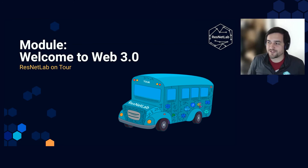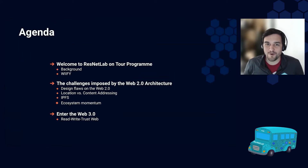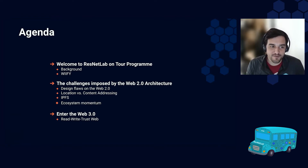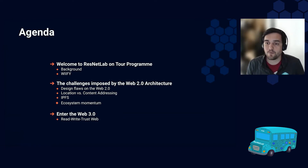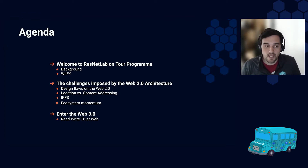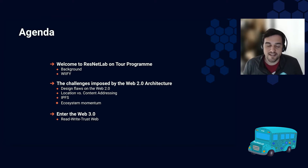Welcome everyone to the first module of the ResNetLab OnTour program. This is the first of many modules and I'm really excited to welcome you all to this program that we have been developing for over a year. In this first module you'll get to know a little bit more about what the program is about, what's in it for you, and then I'll make a quick introduction — a motivation for why the Web2 architecture has some design flaws that need to be improved upon. I'll tell you about what IPFS is, how it contributes, and what the Web3 revolution is.